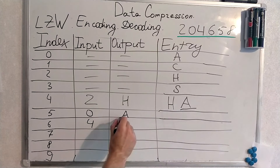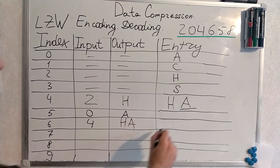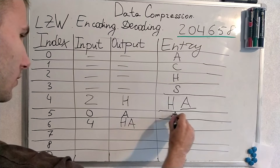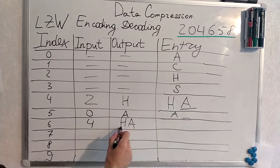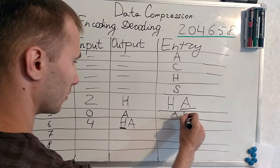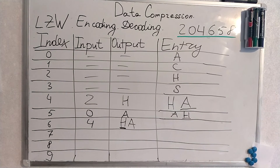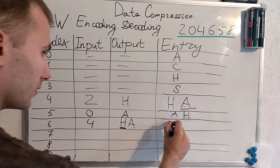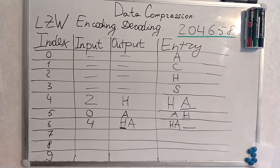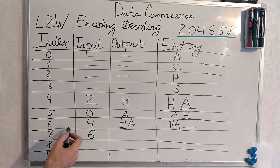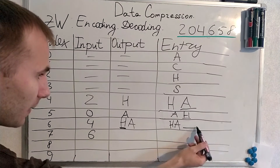Index 4 is ready, so the output is HA — with entry and something following. What's next? It's 6. Now it's a tricky place: to decode 6 we need to refer to the output.